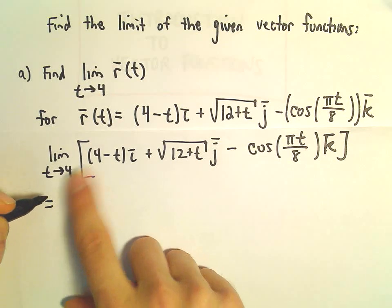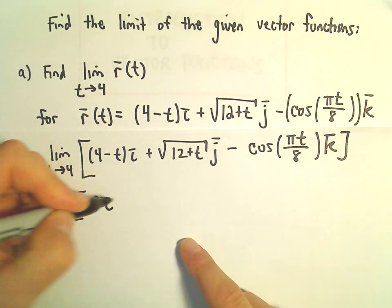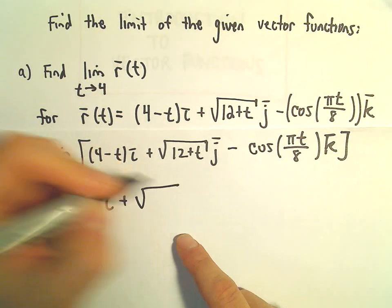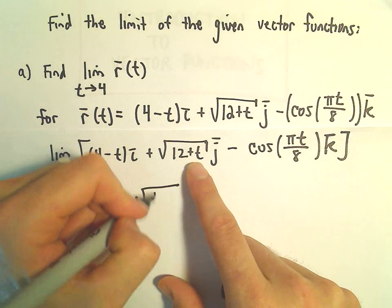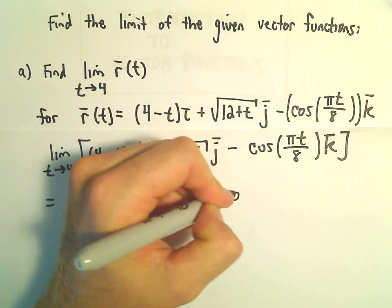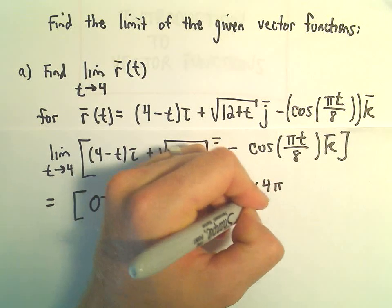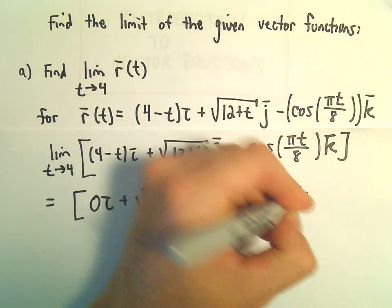So notice if we plug in t equals 4, well, we'll just get 0 times i plus we would have the square root of 12 plus 4, so we would get the square root of 16 times j. And then we'll get minus cosine of, I guess we'll have 4 pi over 8 times k.